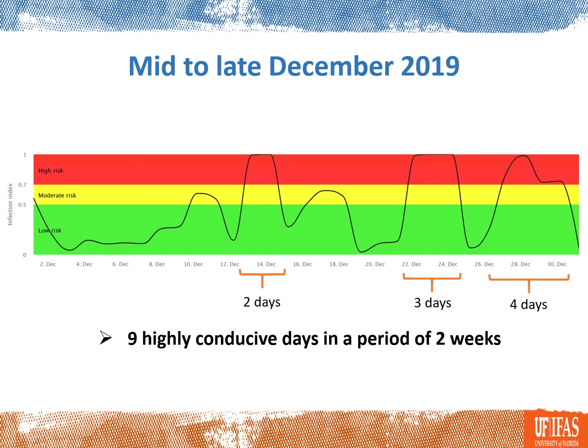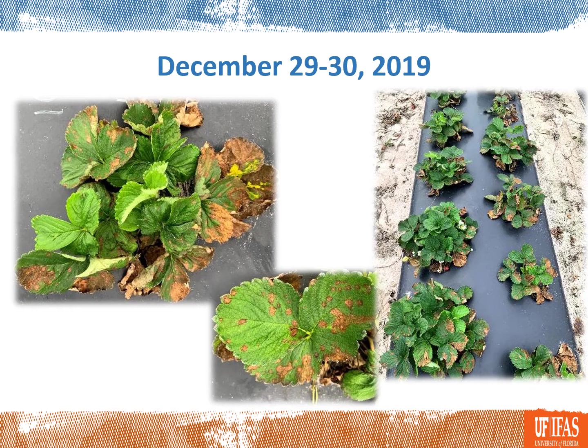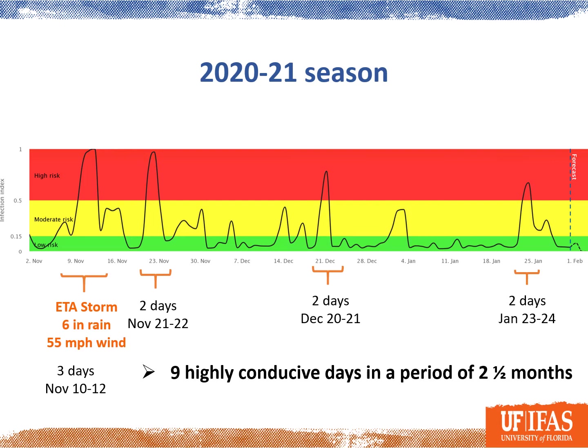That's basically what we had in mid to late December 2019 — a period of two weeks starting around December 14 where we had nine days where conditions were highly conducive for disease, shown as the peaks at the top. And after that two-week period we basically saw a lot of leaf spotting and blighting of the leaves in the fields.